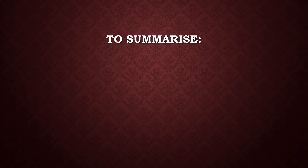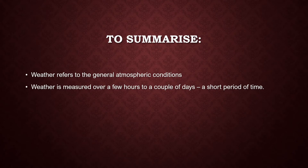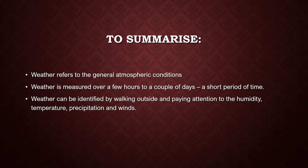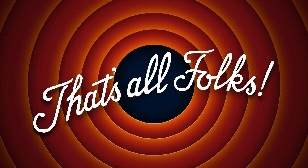Let's quickly summarize what we have covered in this video. We have gone through the definition of weather — being the general atmospheric conditions over a short period of time, about a day or a few hours. We have gone over the four aspects of weather: temperature, wind, precipitation, and humidity. And we have identified weather in some photographs. That brings us to the end of this video — thank you for watching, and hopefully you enjoyed it and found it educational.